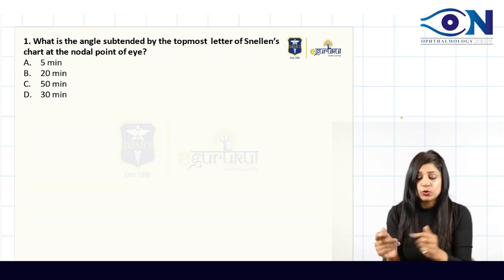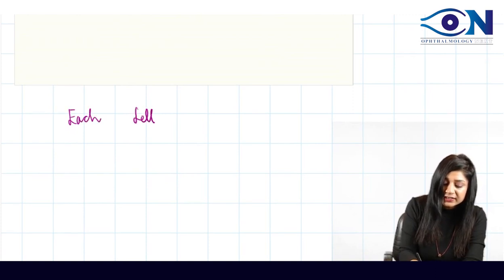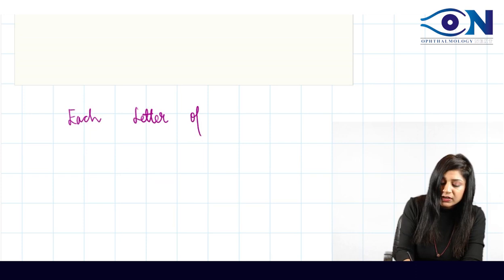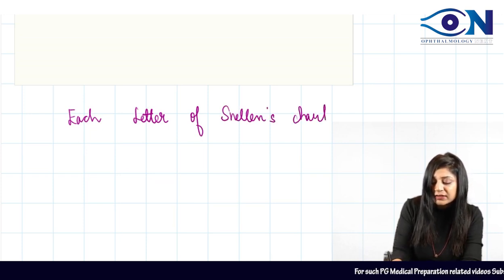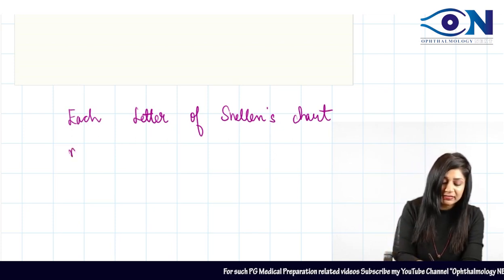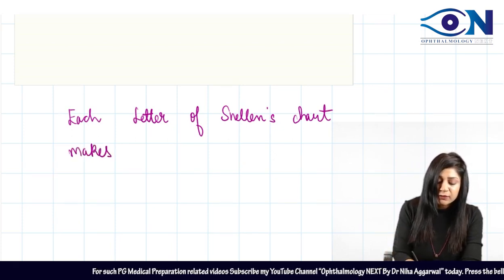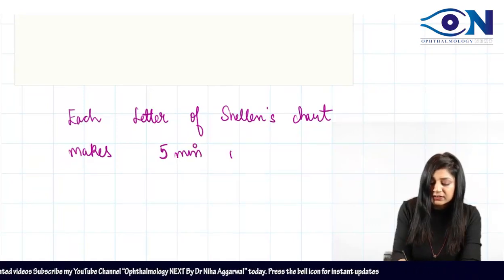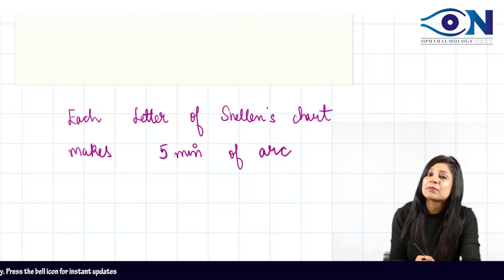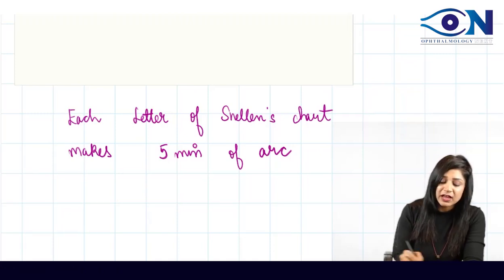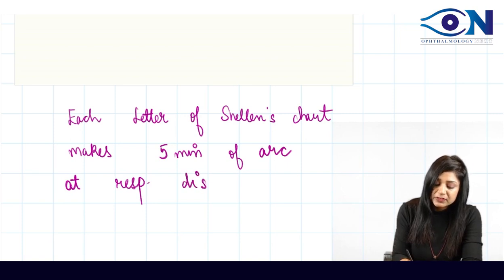You already know that each letter of Snellen's chart makes the same angle, and that is 5 minutes of arc at the respective distance.